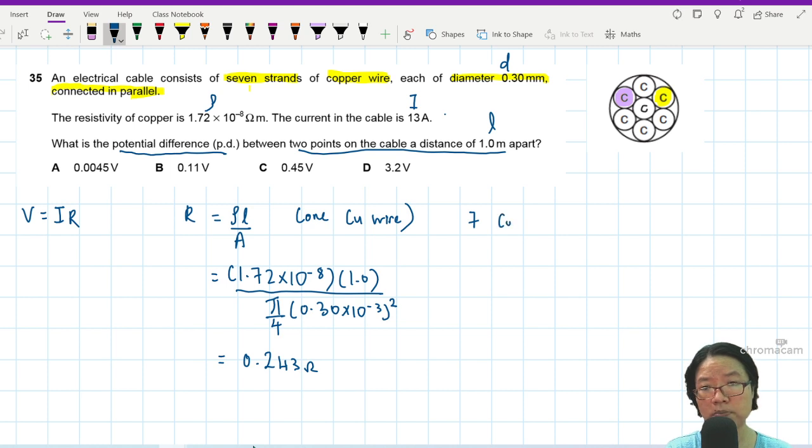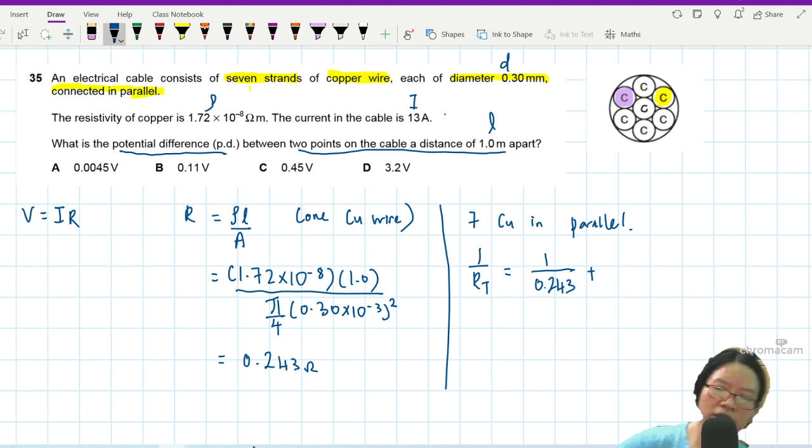We have seven copper wires in parallel. So if it's seven copper wires in parallel, then I will need to take 1/R_total = 1/0.243 + 1/0.243 + 1/0.243. Can I just multiply by 7? Because you're going to do this seven times, right? So times 7. Your total resistance is actually 0.243 divided by 7, which is...